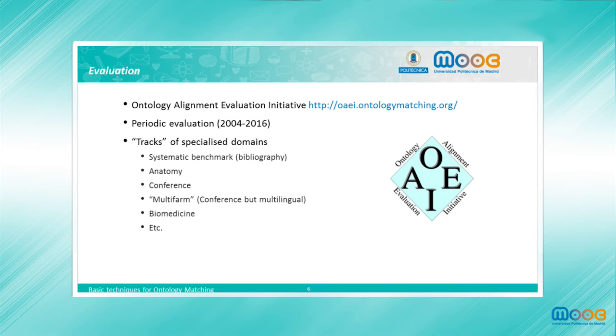This evaluation is periodic and started in 2004, and one can find there different tracks of specialized domains, such as bibliography domain, anatomy, biomedicine, conference domain, etc.